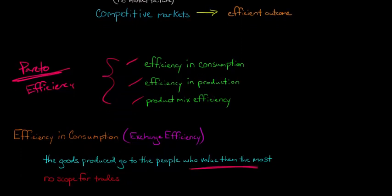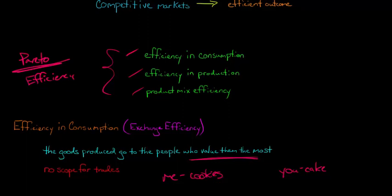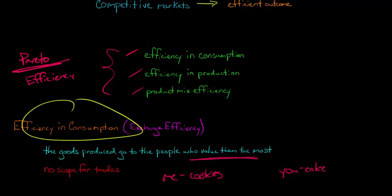For example, let's say I really like cookies and you really like cake. So let's say there's one cake and one plate of cookies in our economy and those are the only goods. You should get the cake and I should get the cookies. If it started out where I had the cake and you had the cookies, we would just trade to the point where we get to an efficient outcome — an outcome that's efficient in consumption.